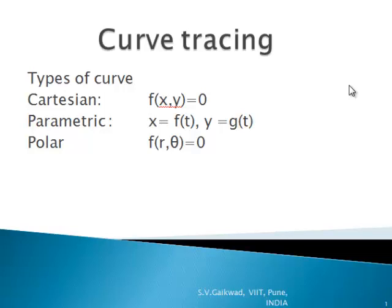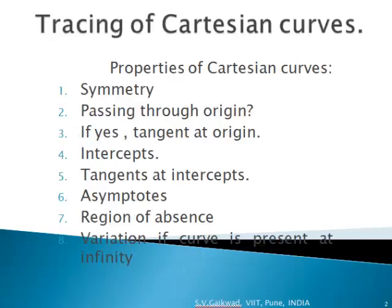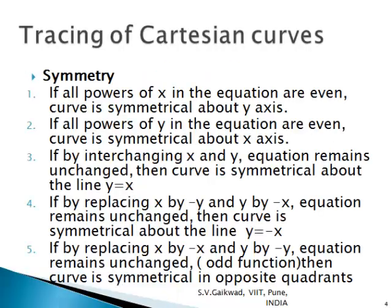Curves in a plane are given in three forms: Cartesian, parametric, and polar. In today's lecture we will study tracing of Cartesian curves. While studying Cartesian curves, we study these properties: symmetry, whether the curve passes through the origin, tangents at the origin, intercepts, tangents at intercepts, asymptotes parallel to the axes, region of absence, and variation if the curve is present at infinity.